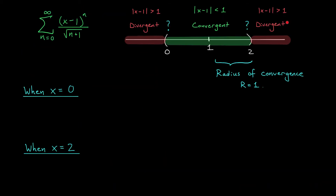This diagram shows us where we are in the problem. We've used the ratio test to show that the series converges when |x−1| < 1 — all x values less than 1 unit away from the center, so everything strictly between 0 and 2. If |x−1| > 1, the series definitely diverges; this includes numbers beyond 2 and before 0. The only thing left is to determine whether the series converges at the endpoints x = 0 or x = 2. Since we can move at most 1 unit from the center and still maintain convergence, the radius of convergence of this power series is 1.